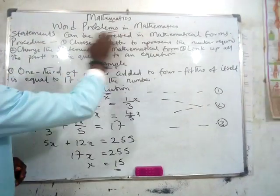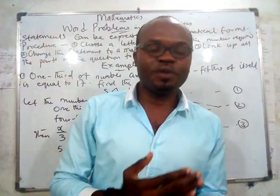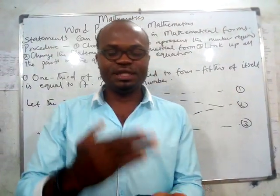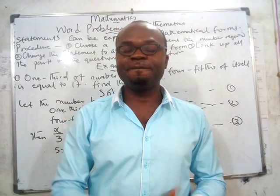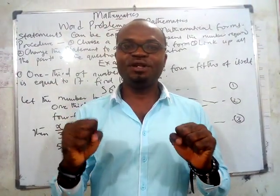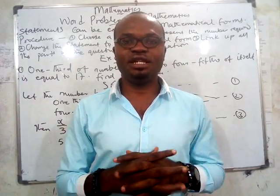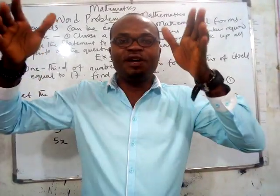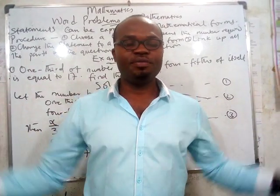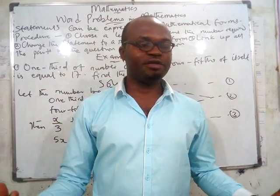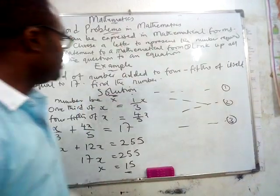To summarize: word problems are statements that can be expressed in mathematical forms. To solve them: first, represent the unknown number with a letter such as x; second, convert all the statements to mathematical form; third, link up all the mathematical forms to create an equation and solve it. That is what we have demonstrated using this example.